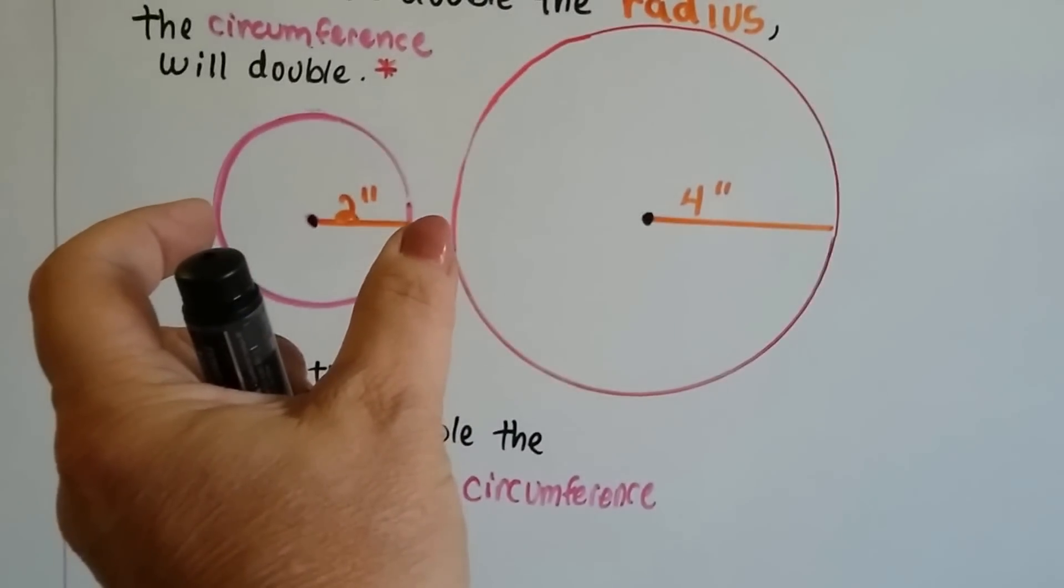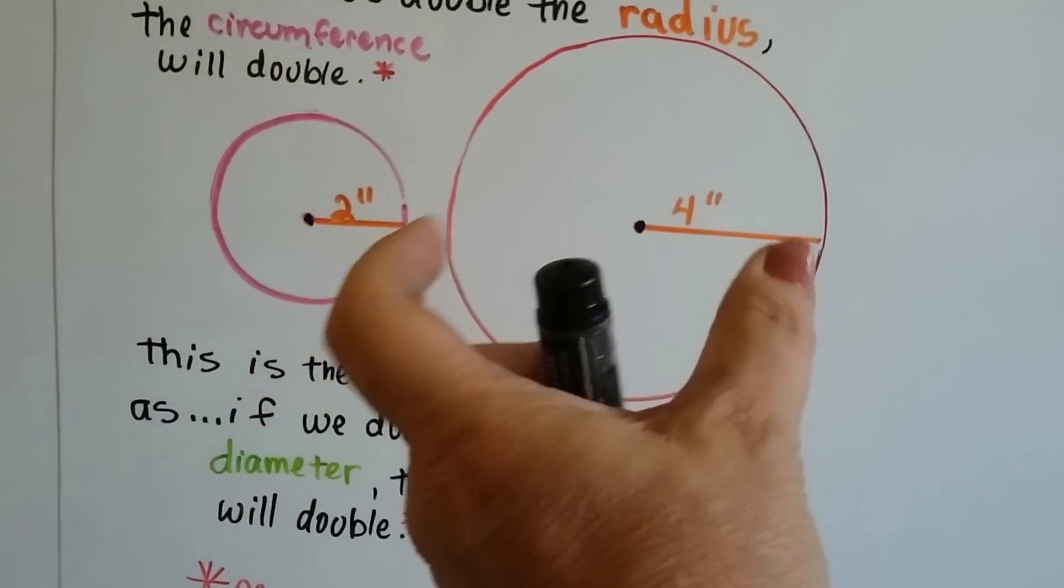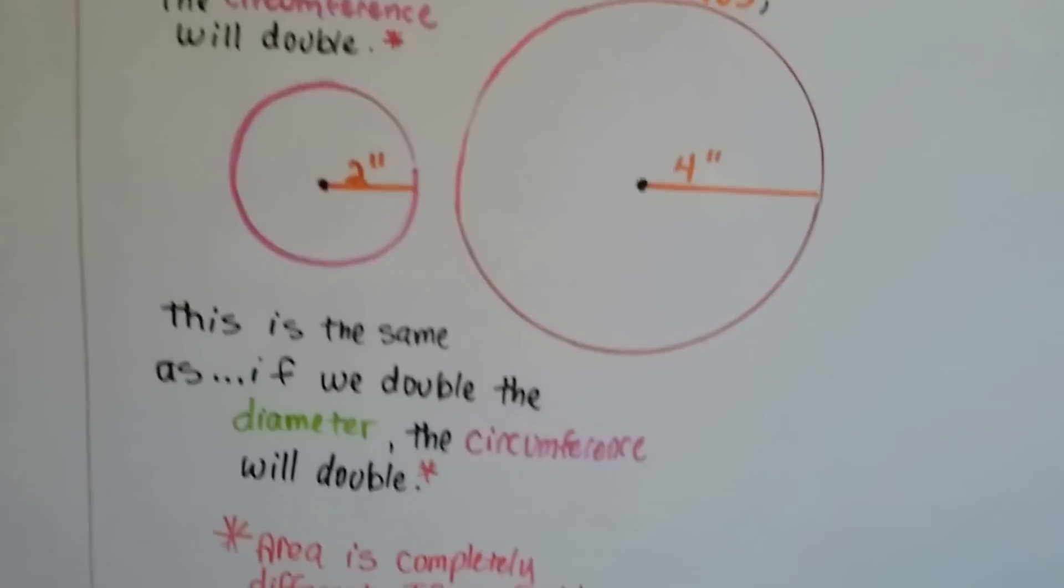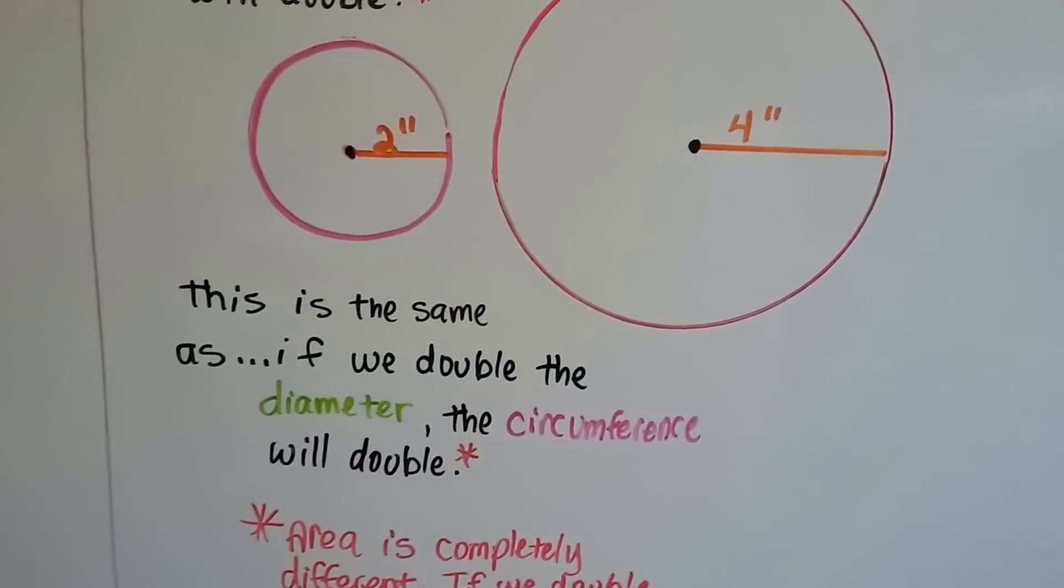So if we have a four-inch diameter, and we double it to an eight-inch diameter, that's the same thing as we just did with the two-inch and the four-inch radii. Same thing. The circumference will double.